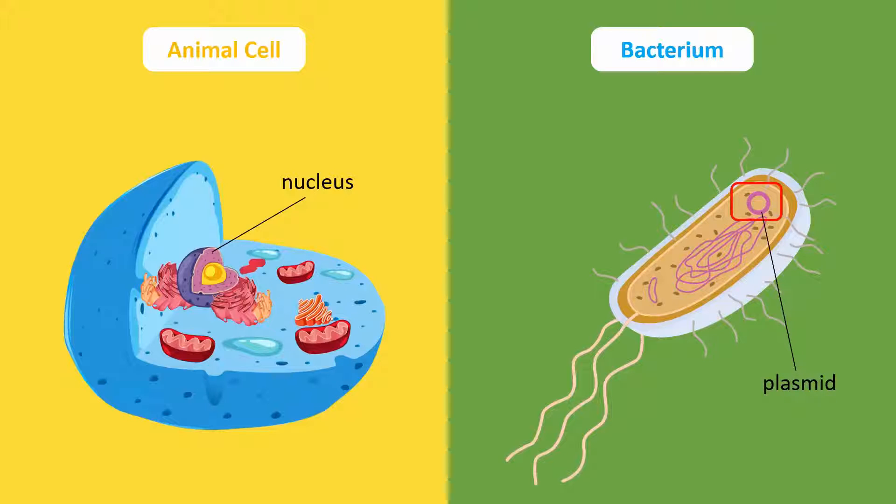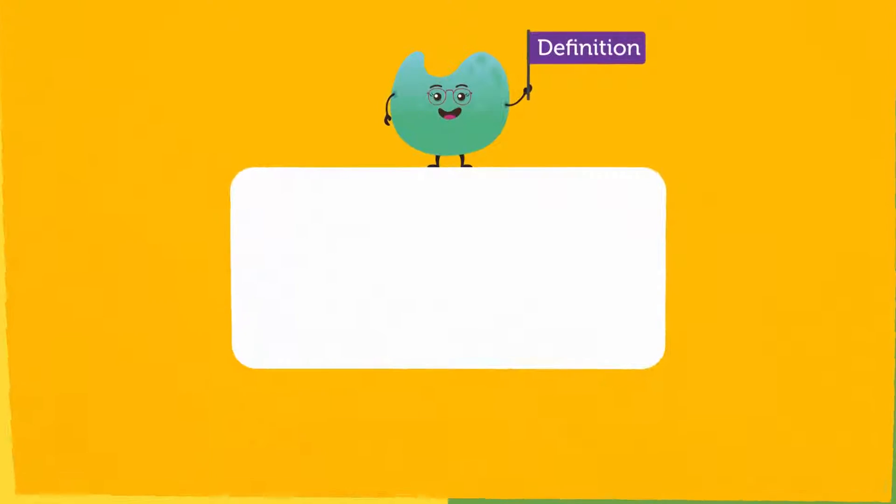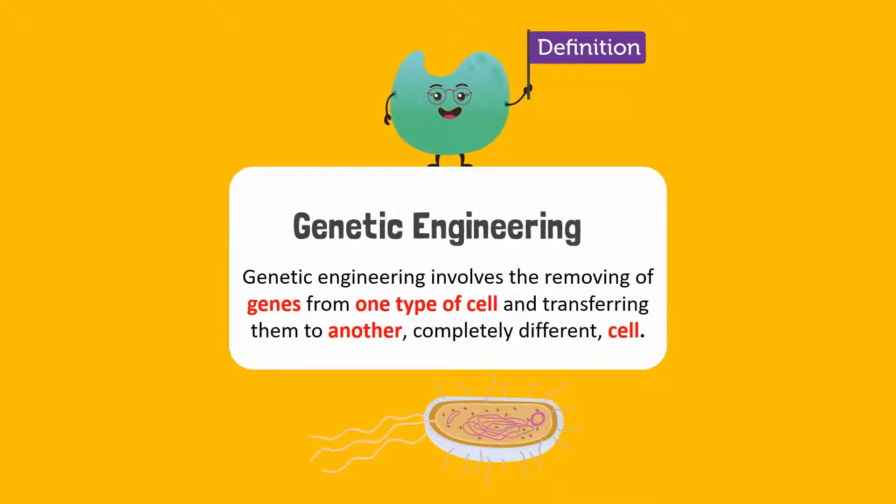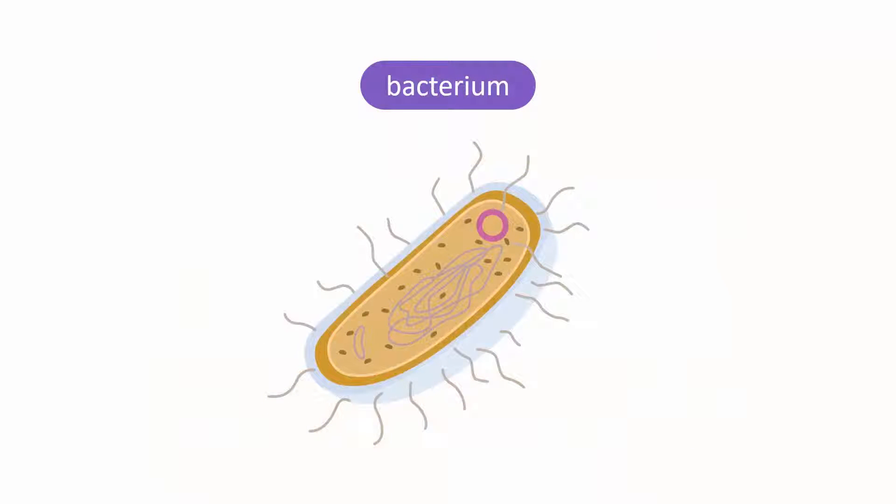Bacteria are used to produce insulin by a process called genetic engineering. Genetic engineering involves the removing of genes from one type of cell and transferring them to another completely different cell. Let's take a closer look at this process.